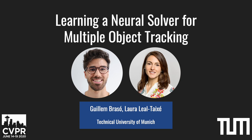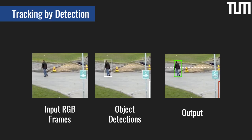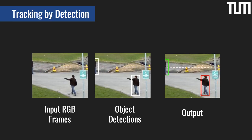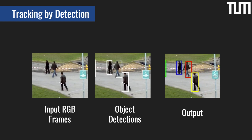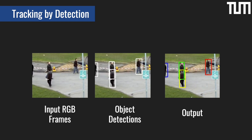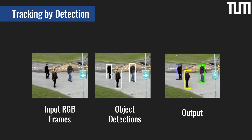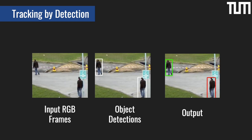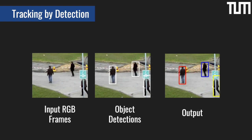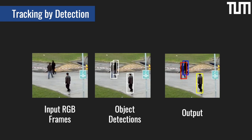Hi, my name is Guilhem and I'm going to present our work on learning a neural solver for multiple object tracking. In tracking by detection, our input is a sequence of RGB frames in a video and object detections for every frame. Our task — deep association — is to link these detections into temporally coherent trajectories.